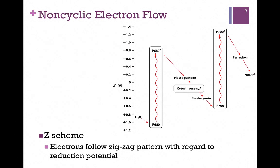Here is the Z-scheme for non-cyclic electron flow. It's an illustration of the changes in the reduction potential, and you've seen a portion of this already. Here's our reaction center P680 chlorophyll at Photosystem 2. Photon absorption promotes it to a high-energy, low-reduction potential state so that it can pass electrons on to Plastoquinone. It returns to the ground state and replaces those electrons from water.